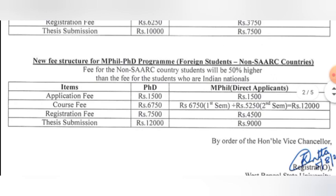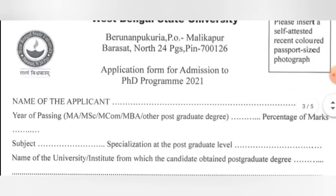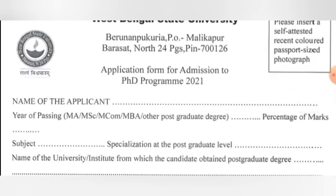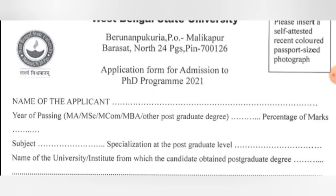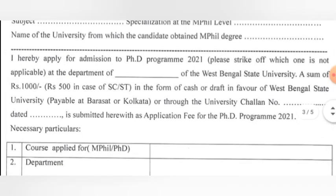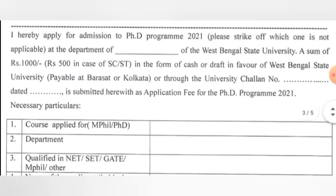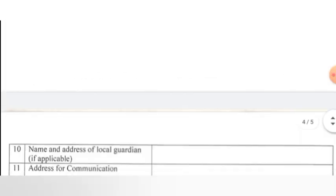There are other structures for foreign students as well. You can see the application form, download the PDF, fill in all the information, and along with the DD, submit it. You can also submit by post, though this is not explicitly mentioned — so you can contact the university for clarification.